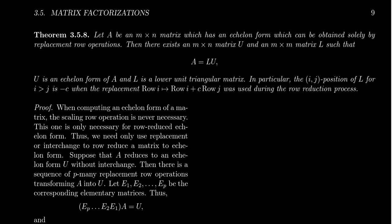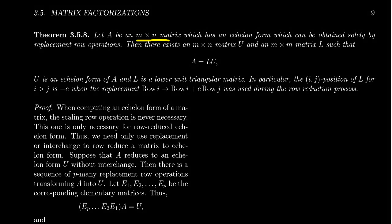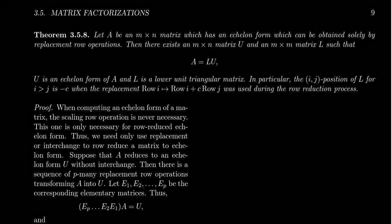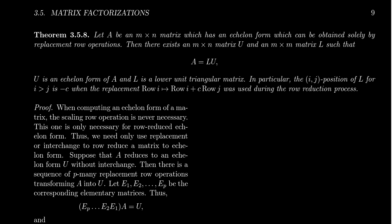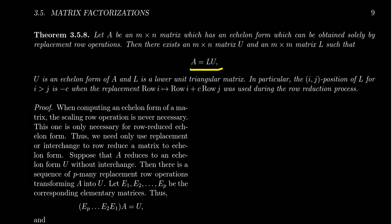In this video we're going to talk about the LU factorization of a matrix. Suppose we have a matrix A which is M by N — it does not necessarily have to be a square matrix. Let A be an M by N matrix which has an echelon form that can be obtained solely by replacement row operations. We can get from A to its echelon form U, and if we can get there with only replacement row operations, then there exists another matrix L which is M by M, such that A factors as L times U.